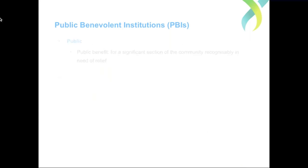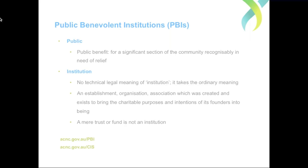Starting with 'public': the essential requirement is that the class of beneficiaries must be extensive — they must form a sufficient section of the community. If an organization only provides help to people from one family, employees of a particular company, or members of a private club, that would not be sufficiently public. Even if the other requirements are met, failing the public test would disqualify the organization.